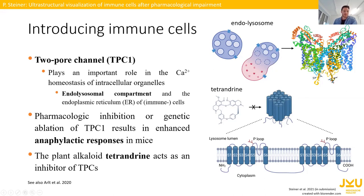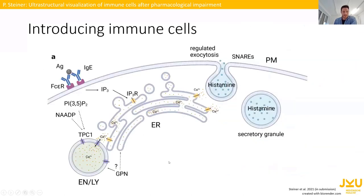It was previously shown that pharmacologic inhibition or genetic knockout of TPC1 results in an enhanced anaphylactic response in mice. For the pharmacological part, the plant alkaloid tetrandrine is very interesting because tetrandrine is known to act as an inhibitor of those two-pore channels.